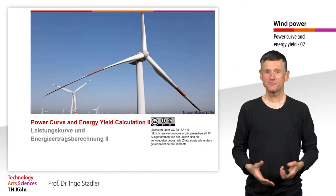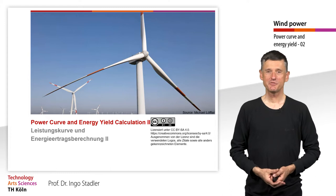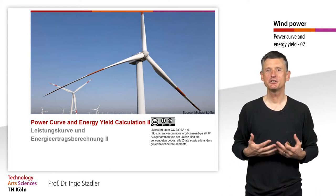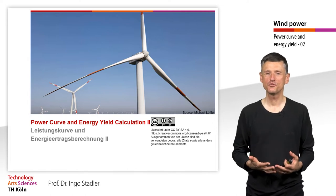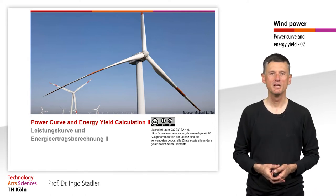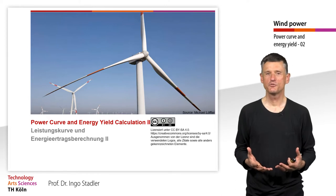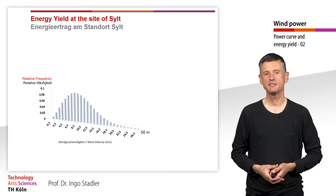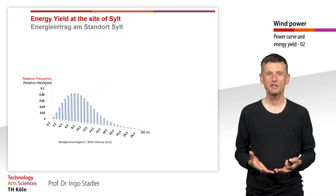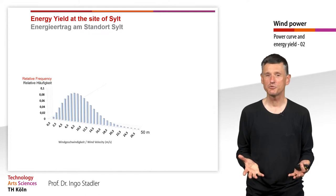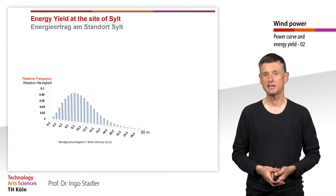Hello and welcome to the second video of this series. Now we want to have a look at how we can calculate the energy yield of a wind turbine with the help of the power curve. First, we look at a place on the North Sea coast at the German island of Sylt, and we start with the relative frequency diagram that we know from the Weibull distribution discussion in other videos.